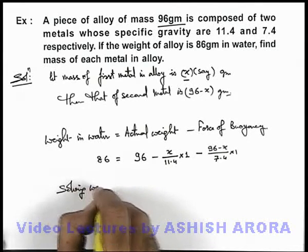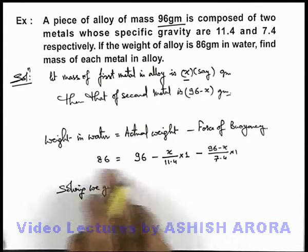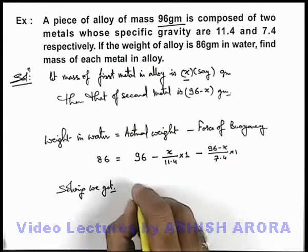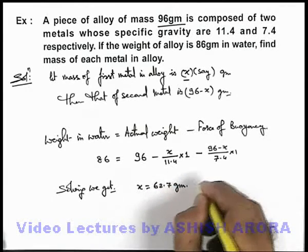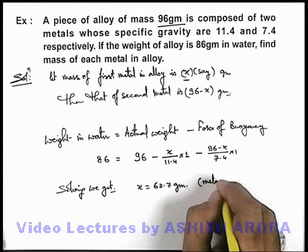If we just numerically simplify the expression, we get the value of x to be 62.7 grams. This is the weight of metal 1 in the alloy.